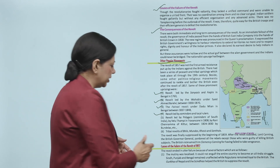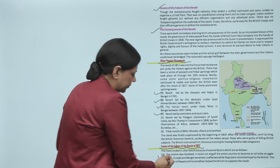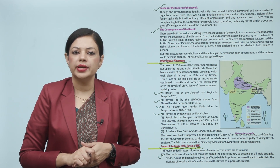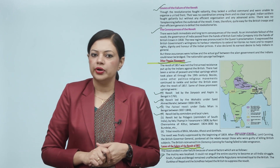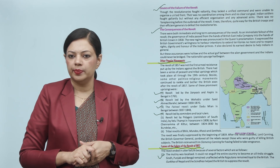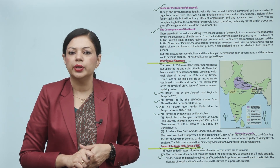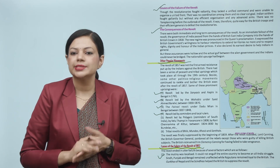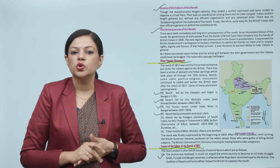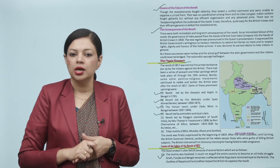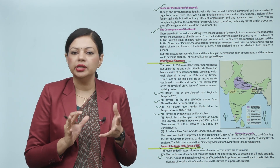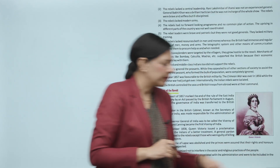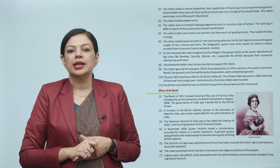Causes of the failure of the revolt of 1857: First, the mutiny was localized — it could not engulf the entire country to become an all-India struggle. Sindh, Punjab, and Bengal remained unaffected, while Rajputana remained loyal to the British. The Gurkhas of Nepal and Scindia helped the British to suppress the revolt. The entire country was not united in this revolt.